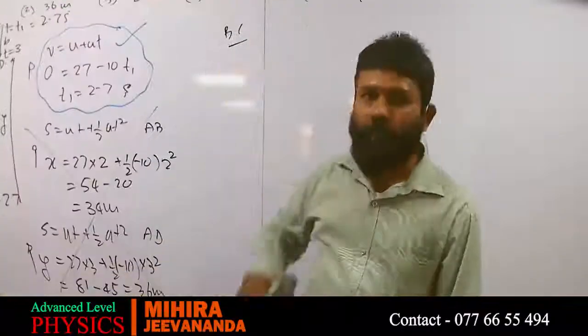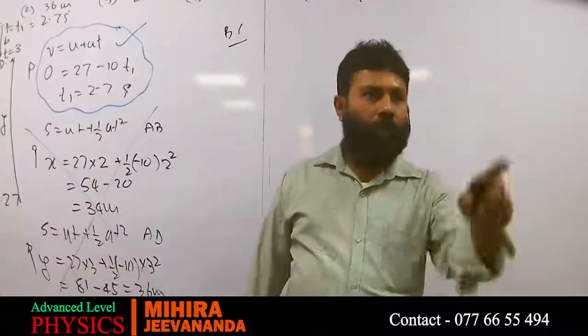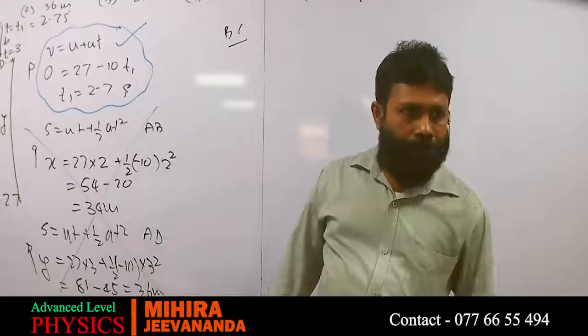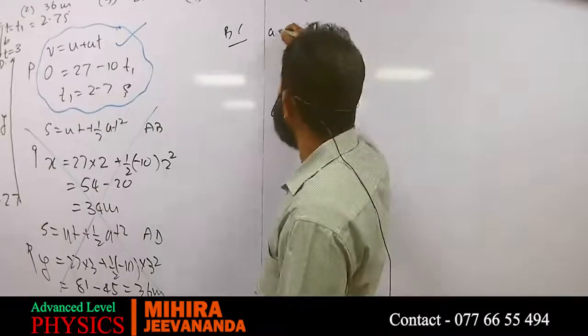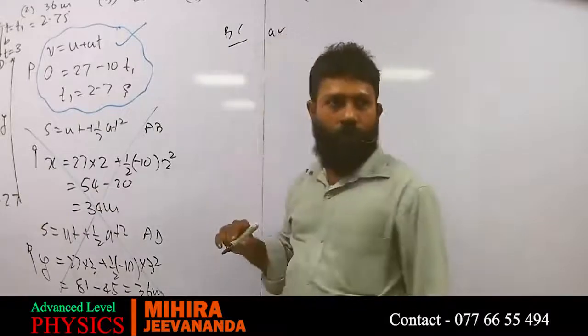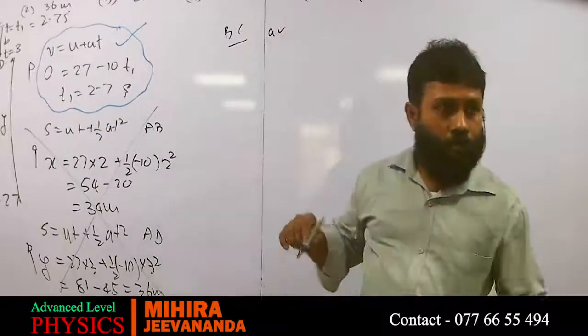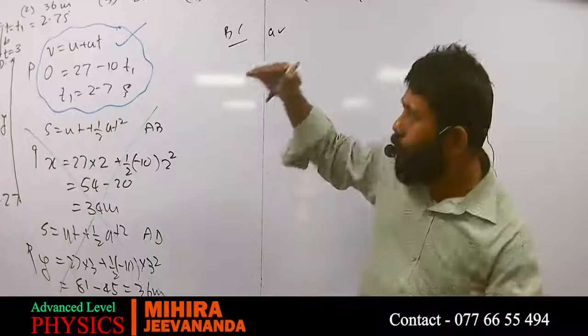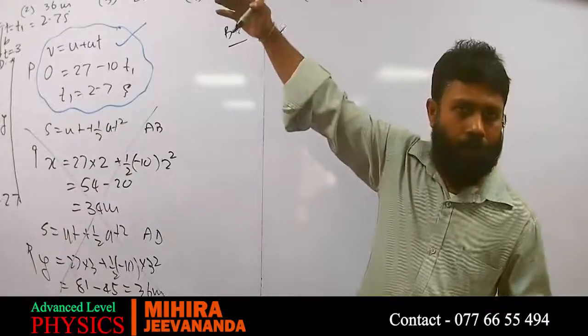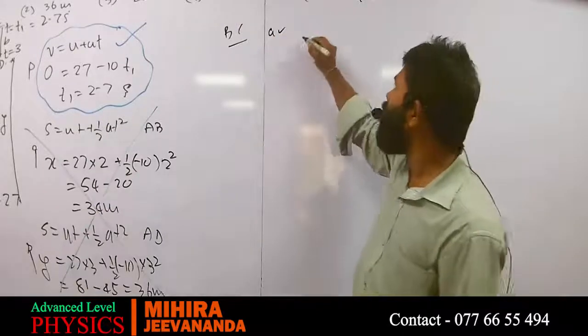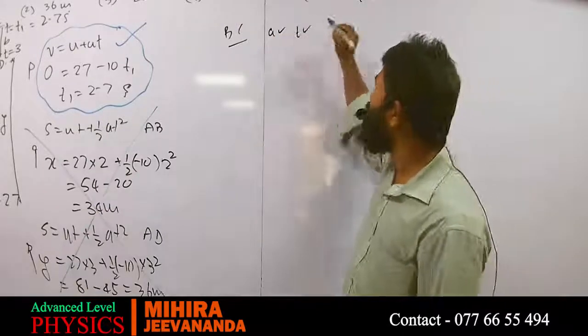From B to C — tell me what is the acceleration. You know the time, because the time is 2.7.